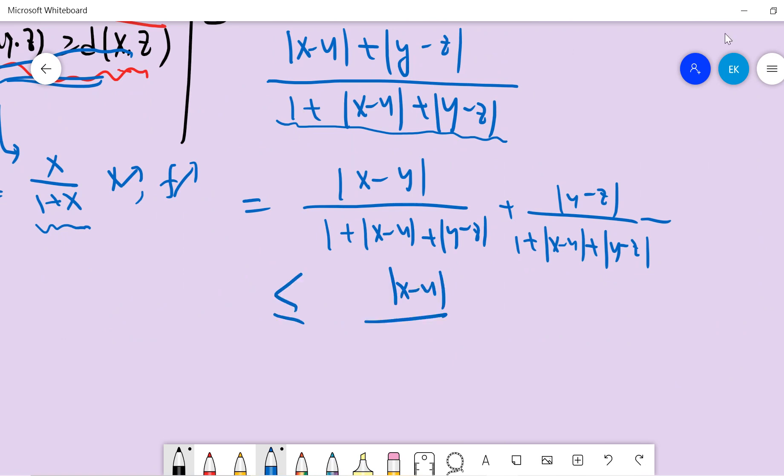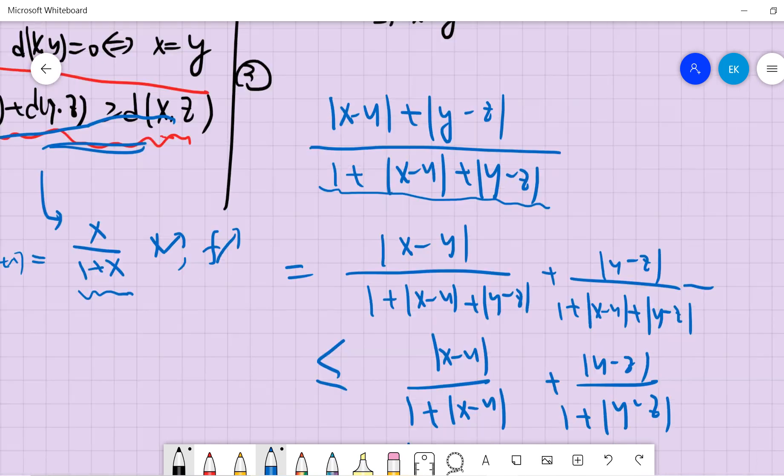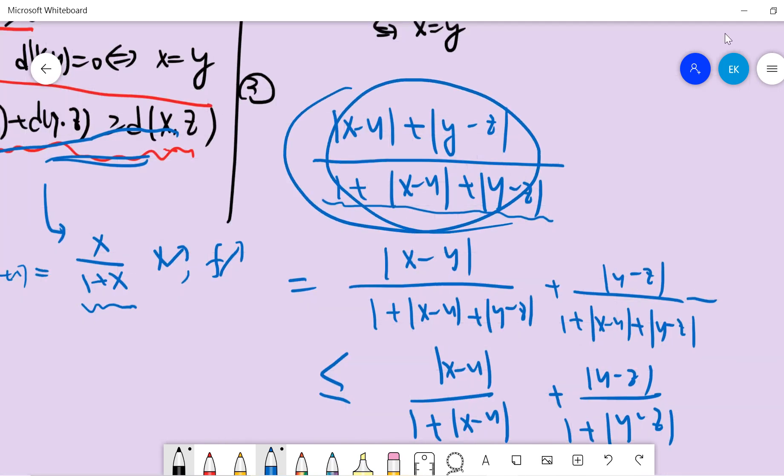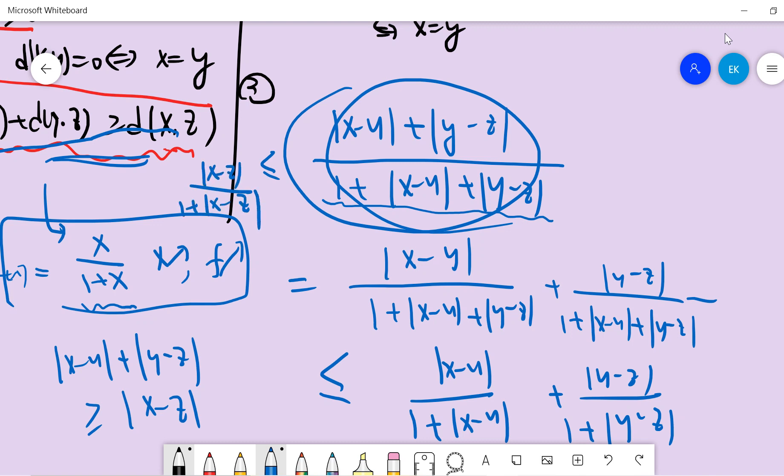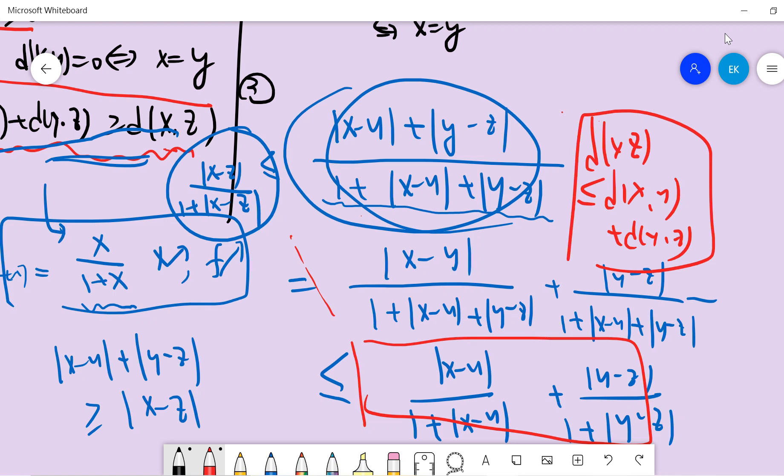So this term is smaller than (|x-y|)/(1+|x-y|) plus (|y-z|)/(1+|y-z|). So |y-z| is smaller than 1 plus 1. So basically this term is d(x,y) plus d(y,z). Okay, so this term, we know that |x-y| plus |y-z| is larger than |x-z|. So from the fact that when x increases, the function of x increases, this term will be larger than (|x-z|)/(1+|x-z|). So combine this one and the right hand side, and we can prove that d(x,z) is more than d(x,y) plus d(y,z). Done.